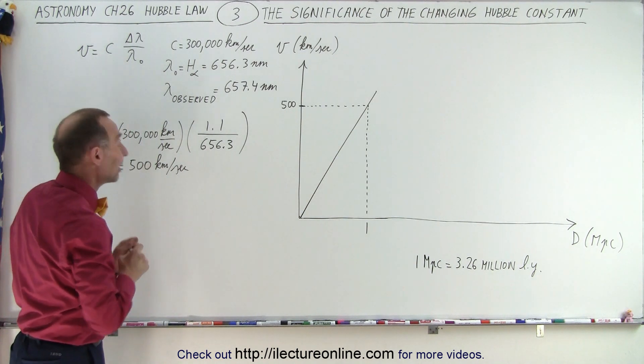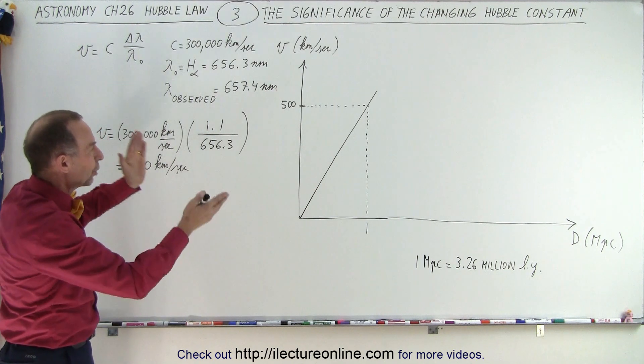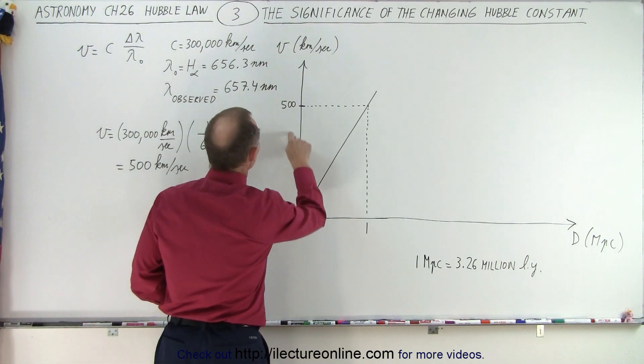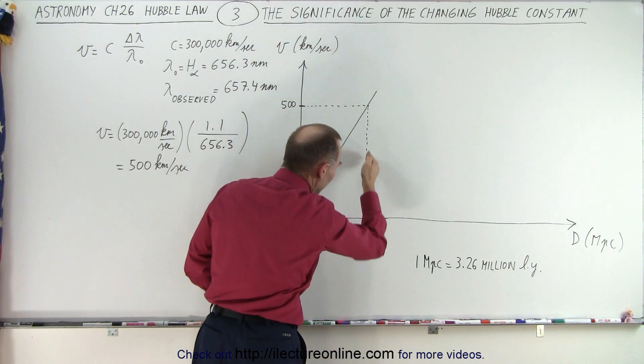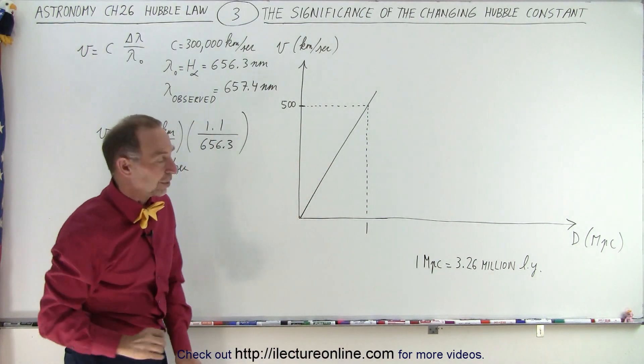So we have 300,000 times 1.1 divided by 656.3 and we get 502.8, let's just call it 500 kilometers per second. You can see that I worked this out before the video because I wanted something pretty close to this number right there. So let's say that we determine now that it's moving away from us at 500 kilometers per second. So we go to our diagram, the Hubble law diagram, we go to the vertical axis, we find 500 kilometers per second, we come up here until we hit that line, we come straight down here.